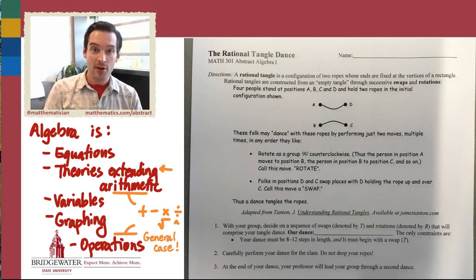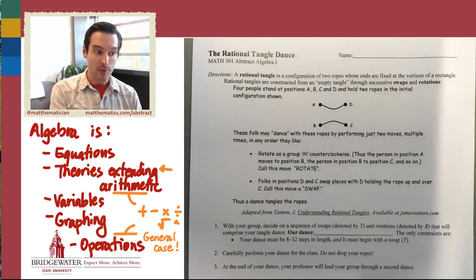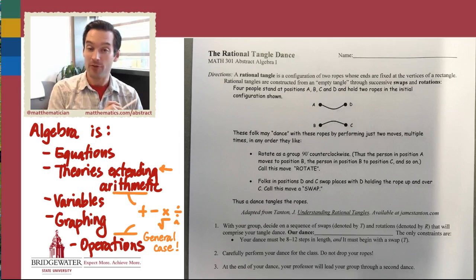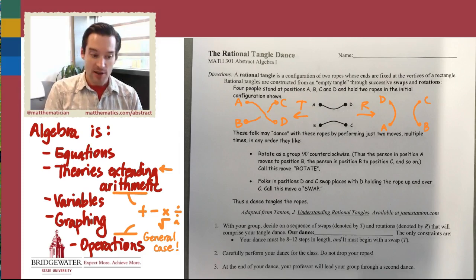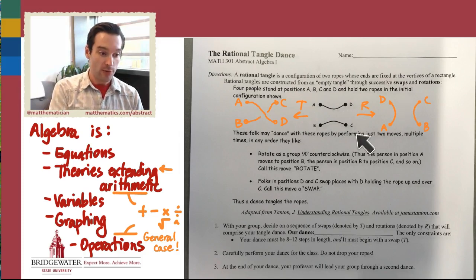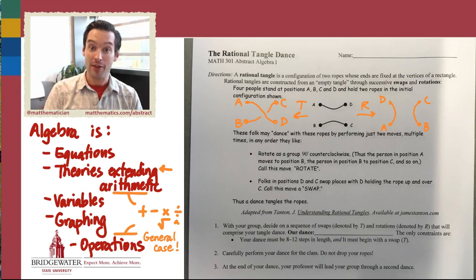My goal in this first class was to give us an experience of thinking about algebra that doesn't involve numbers and doesn't involve the traditional arithmetic we do with numbers. That's why we did the rational tangle dance on day one. We start with two horizontal ropes and four people holding those ropes at the vertices of a rectangle, then conduct the dance by iteratively either rotating — where everybody takes one step to the right — or twisting, where the top right twists over the bottom left. The theory of rational tangles was developed by John Conway in the 1960s and 1970s, and turns out to be a really useful object for studying what we call knot theory in math.